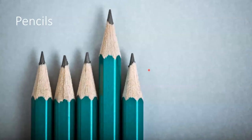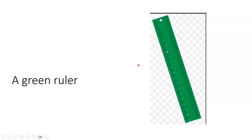And this is a plural: pencils. One, two, three, four, five pencils. A green ruler, this is the singular: one ruler.